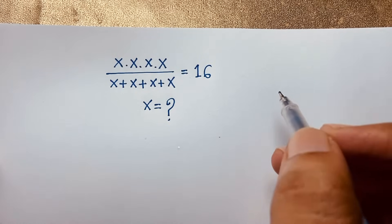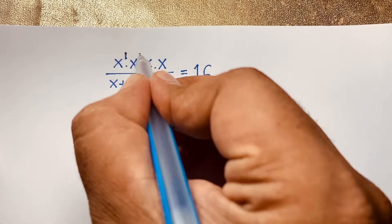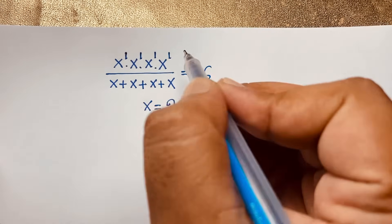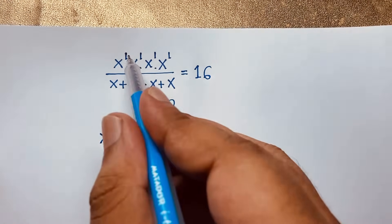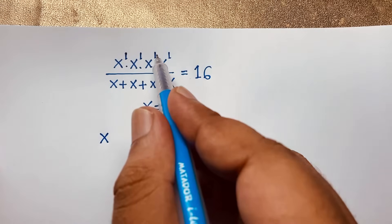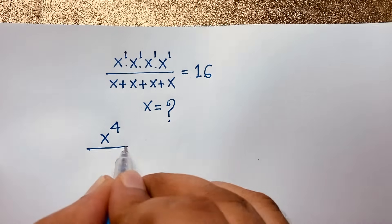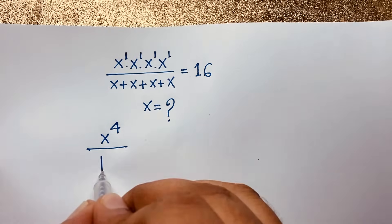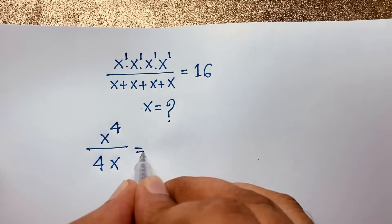I'm going to use the exponential formula. If I add the exponents — each x here is x to the power 1 — so it will be x to the power 1 plus 1 plus 1 plus 1, which equals x to the power 4. Then the denominator x plus x plus x plus x will be 4x, so we have x to the power 4 over 4x is equal to 16.